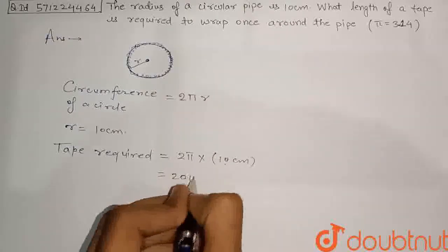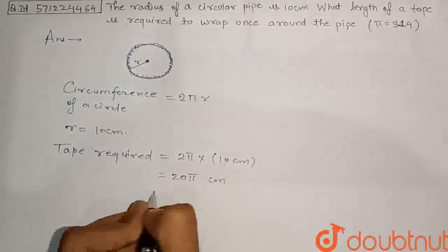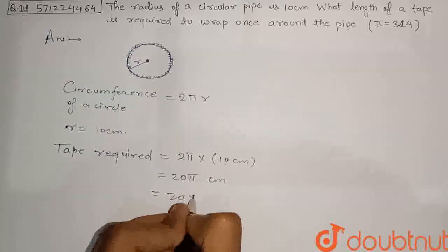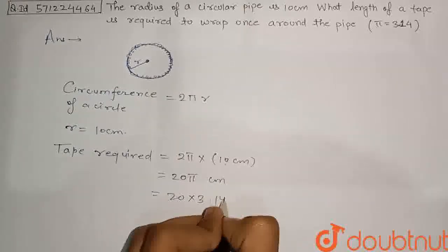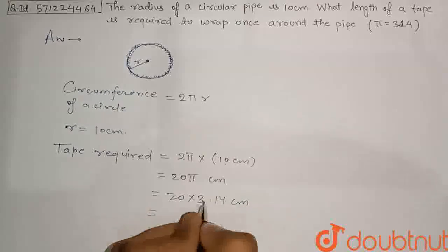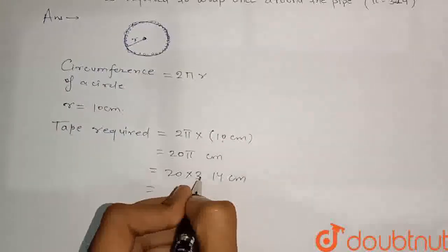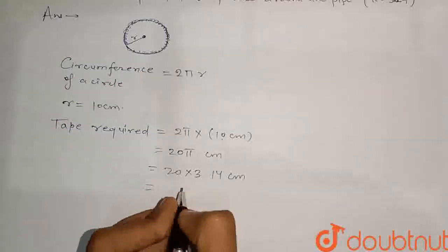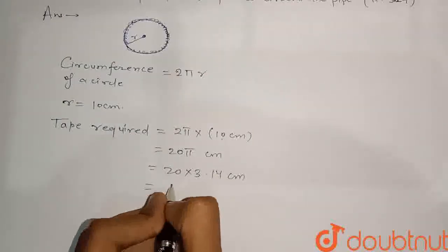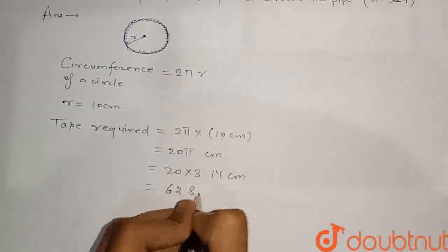This will be 20 pi, and here this is cm. Putting the value of pi, it will be 20 multiplied by 3.14 cm. So multiplying 20 with 3.14 we can get this as 62.8 cm.